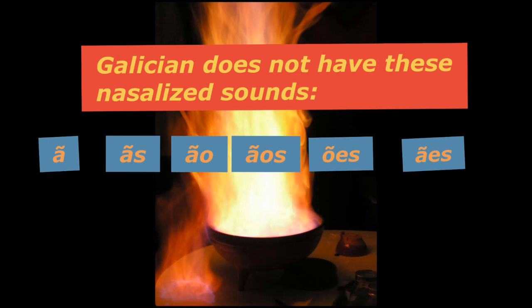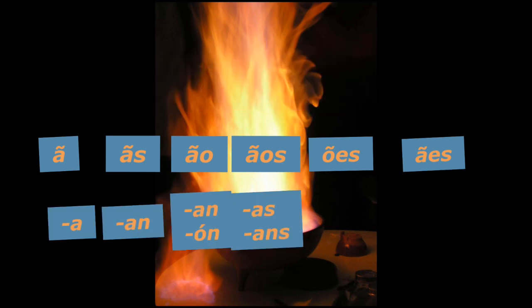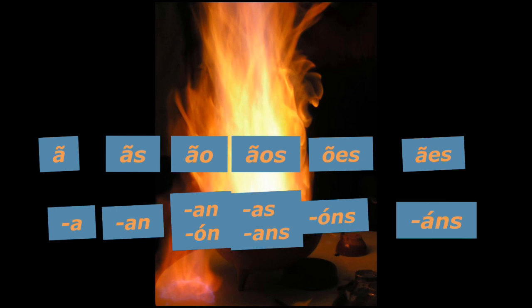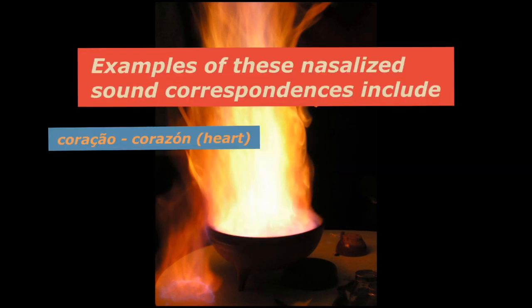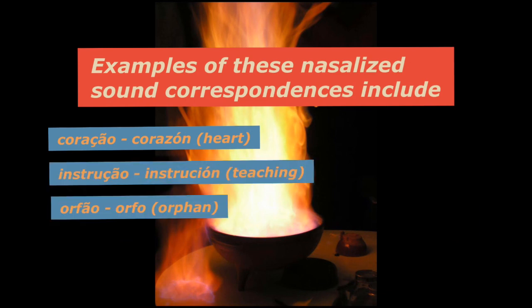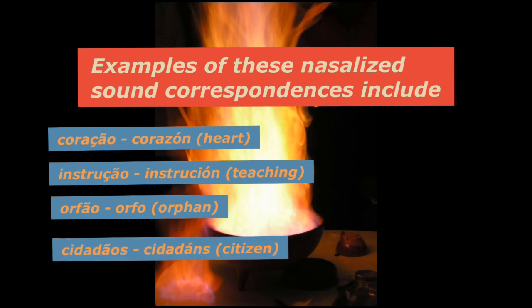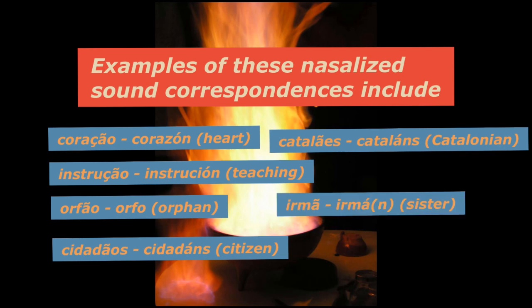These nasal vowels in Portuguese generally correspond to non-nasalized vowels followed by -n or -ns in Galician. Examples of this include: coração (Portuguese) — corazón (Galician); instrução — instruccions; orfão — orfo (Galician); cidadãos — cidadáns; catalãs; irmã — irmán.